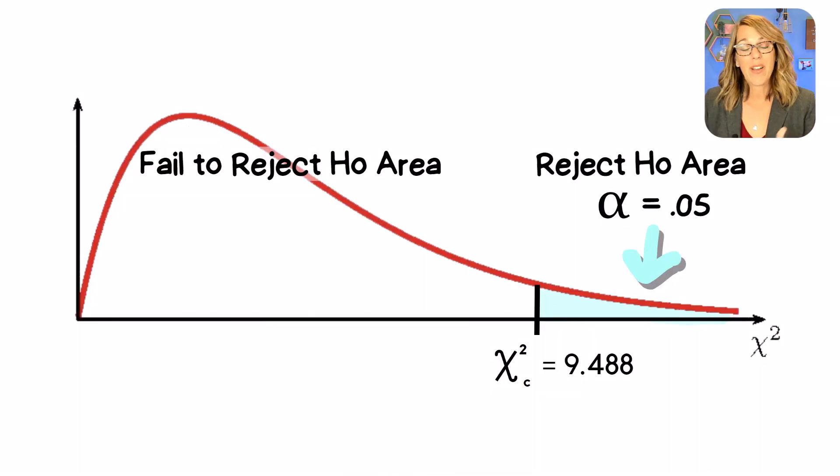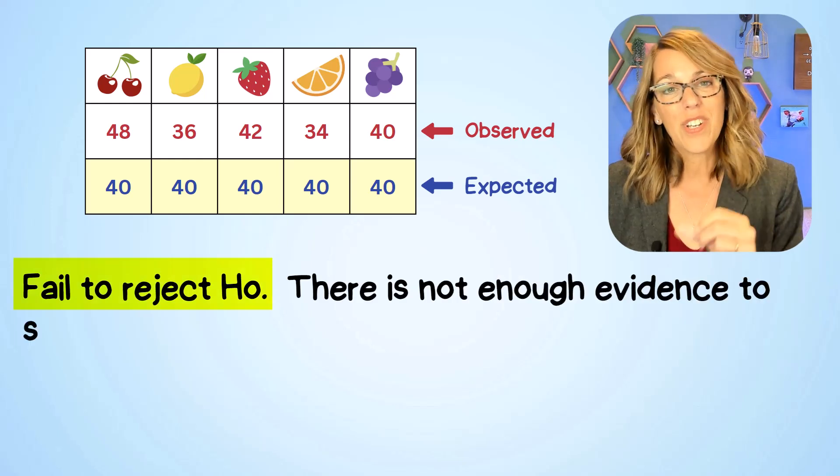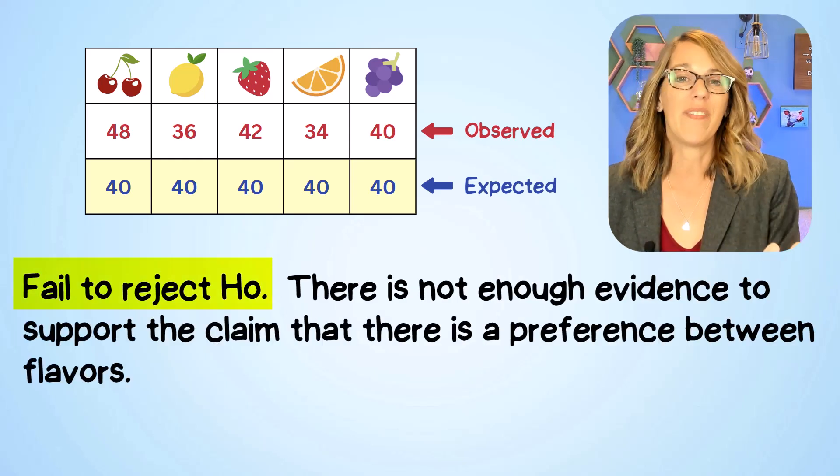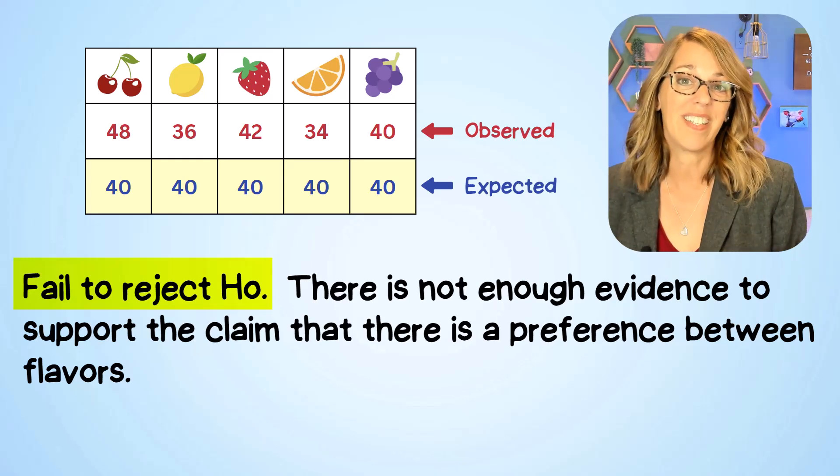However our test value from that calculator was equal to 3. So we are not in the rejection region. So we will fail to reject that null hypothesis. There is not enough evidence to support the claim that there is a preference amongst these flavors.